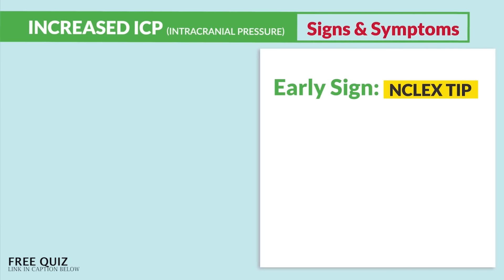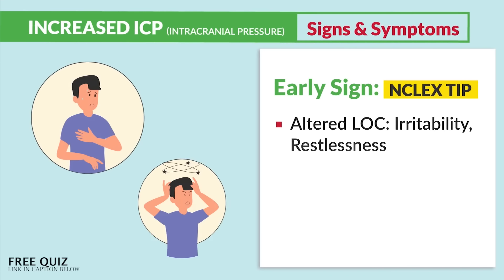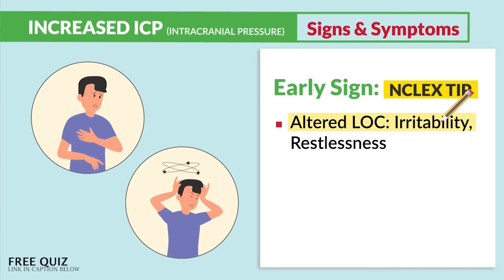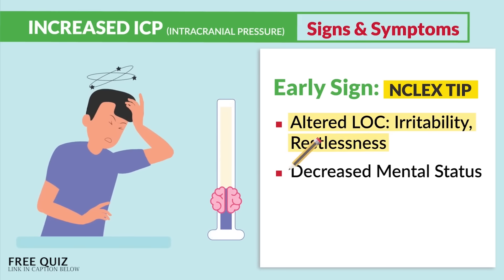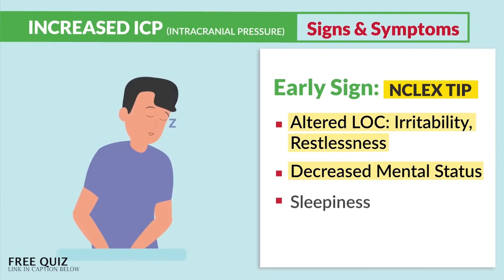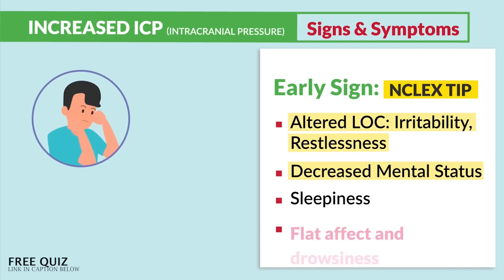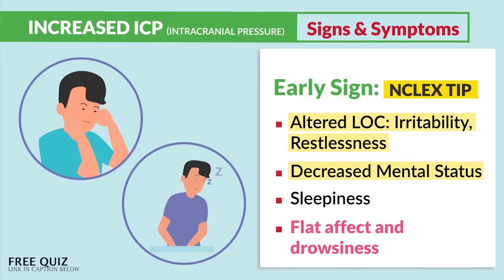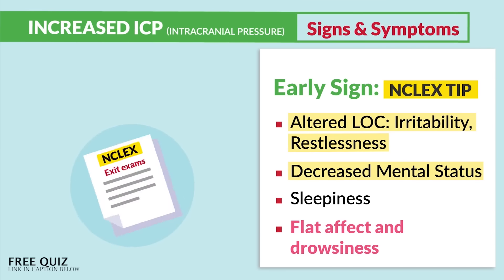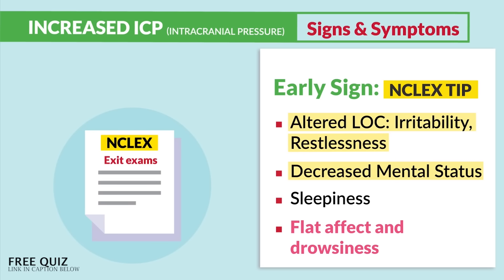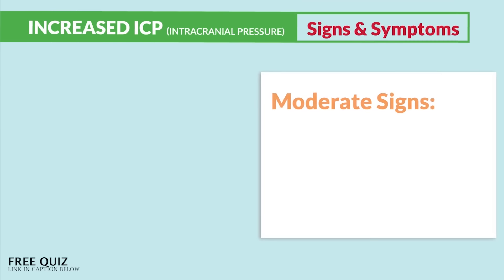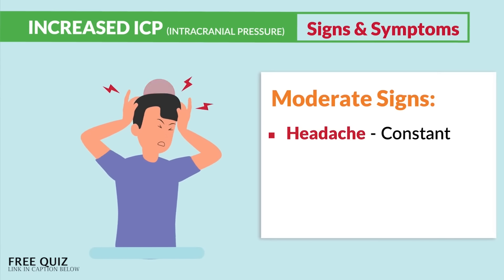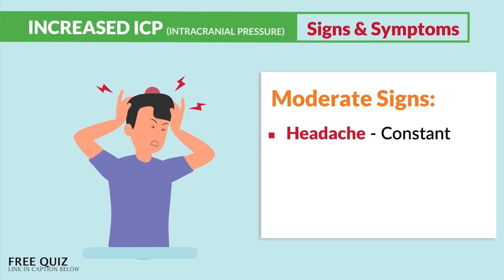For the signs and symptoms to write down: the earliest signs are typically the most tested on the NCLEX. Key terms: altered level of consciousness — also called irritability and restlessness — as well as decreased mental status. We can also see sleepiness, flat affect, and drowsiness. The NCLEX and exit exams love to focus on these early signs, since early detection saves lives.